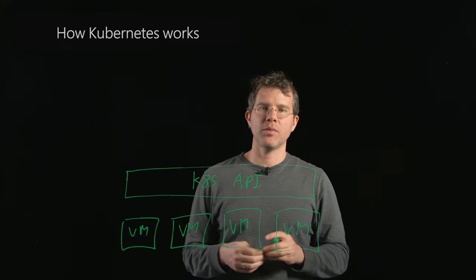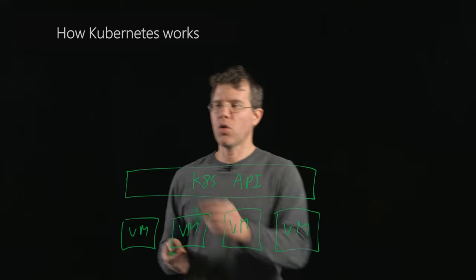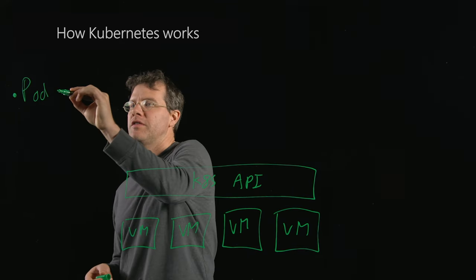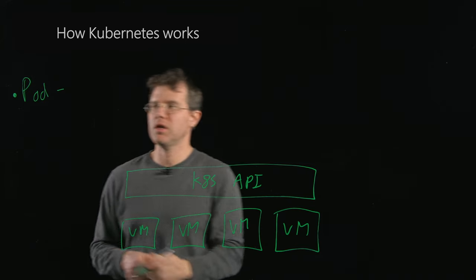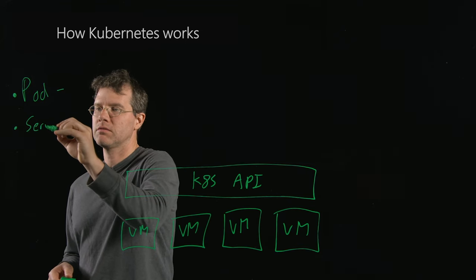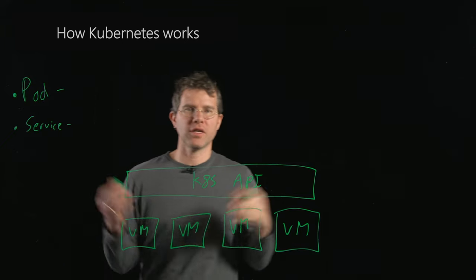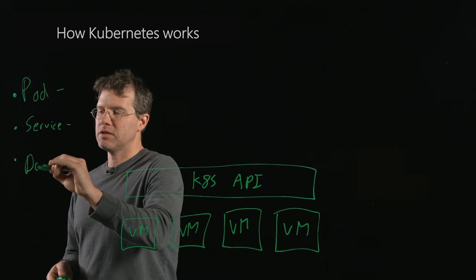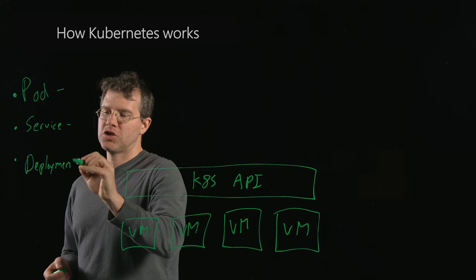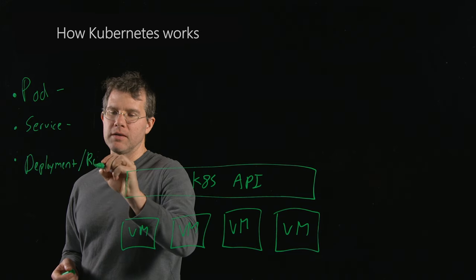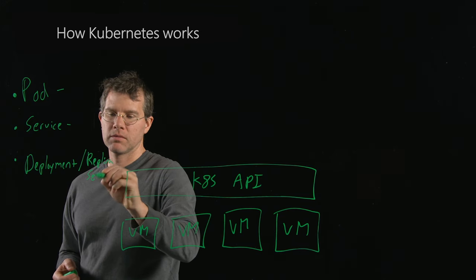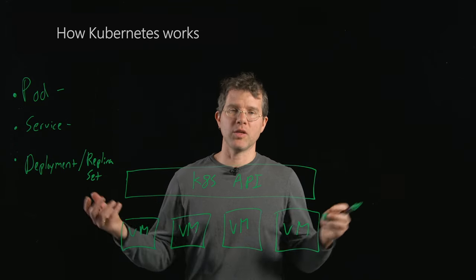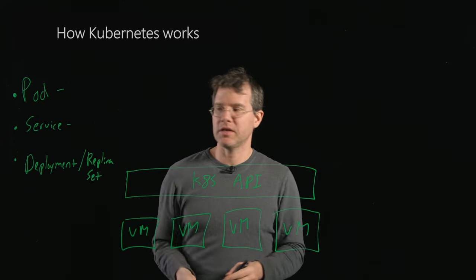The Kubernetes API presents a bunch of different pieces. The core ones are a pod, which is a collection of containers that are co-located on a single machine; a service, which is a load balancer that can bring traffic down to a collection of pods; and then a deployment, which under the hood uses a replica set, which as the name suggests is used for replicating a container multiple times for availability or scale.